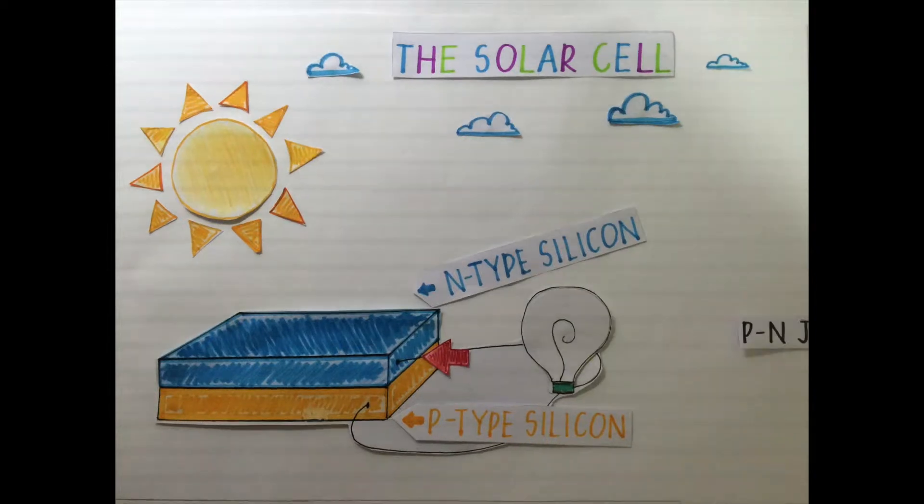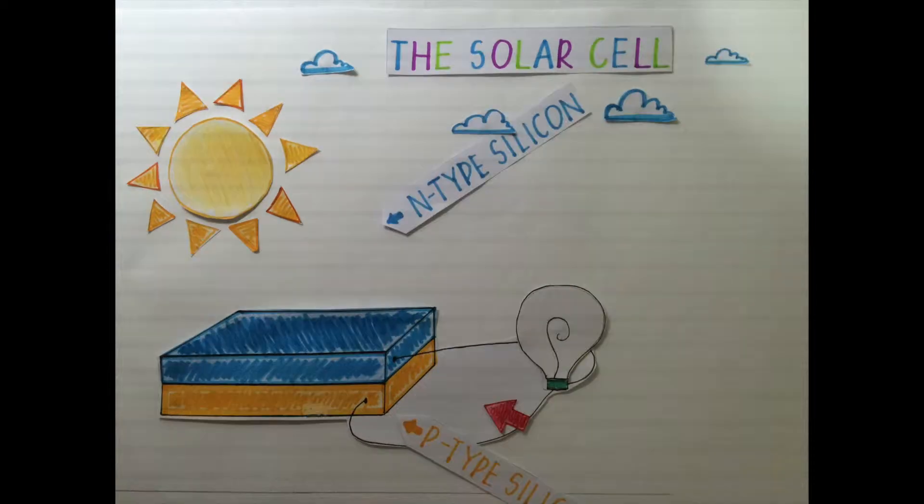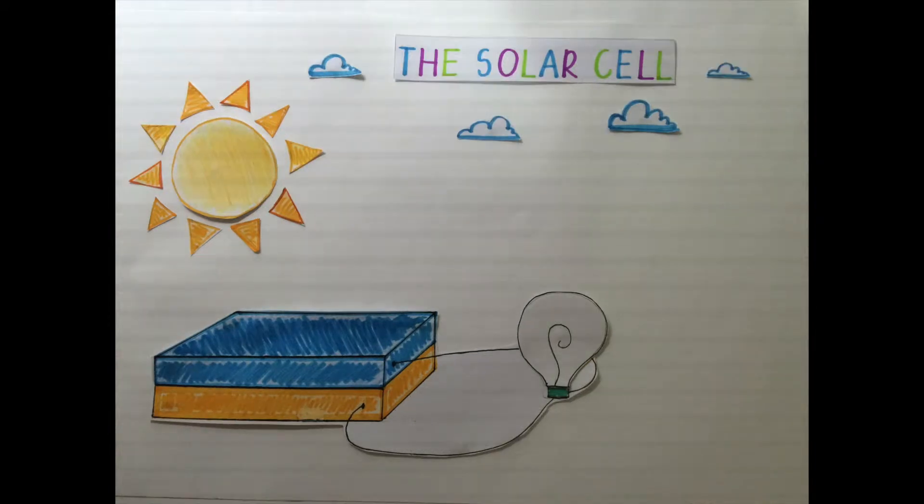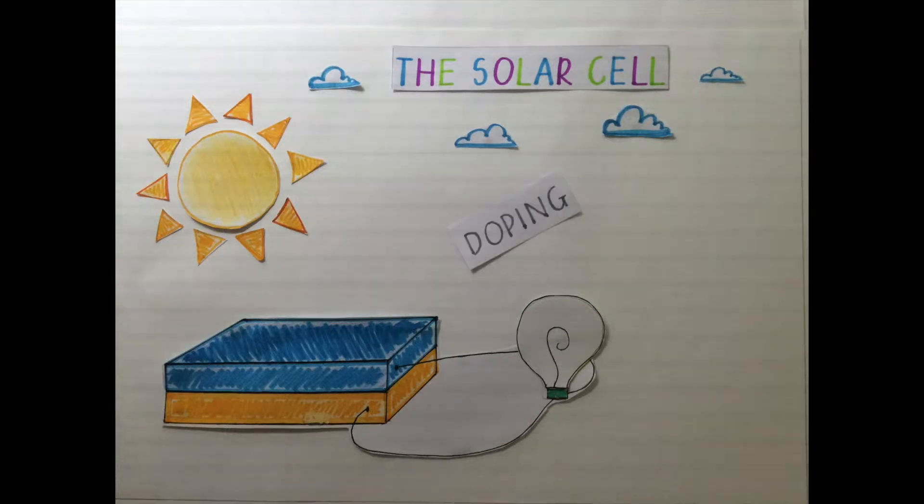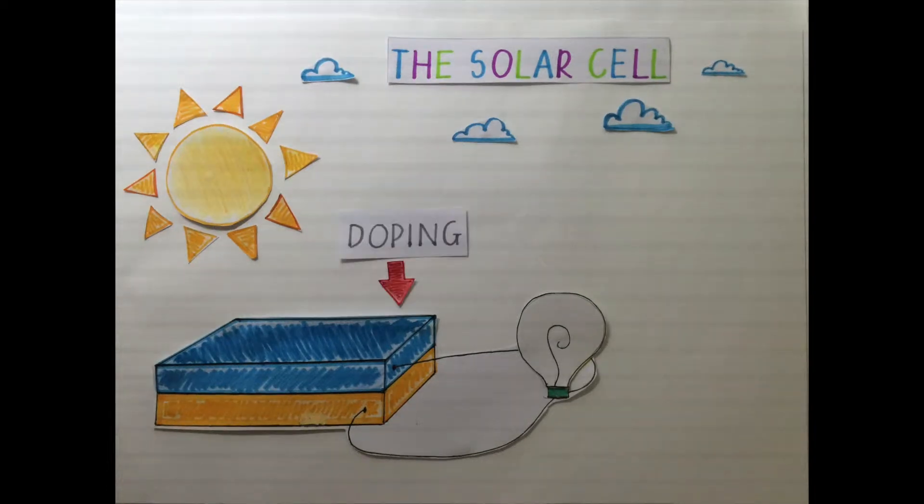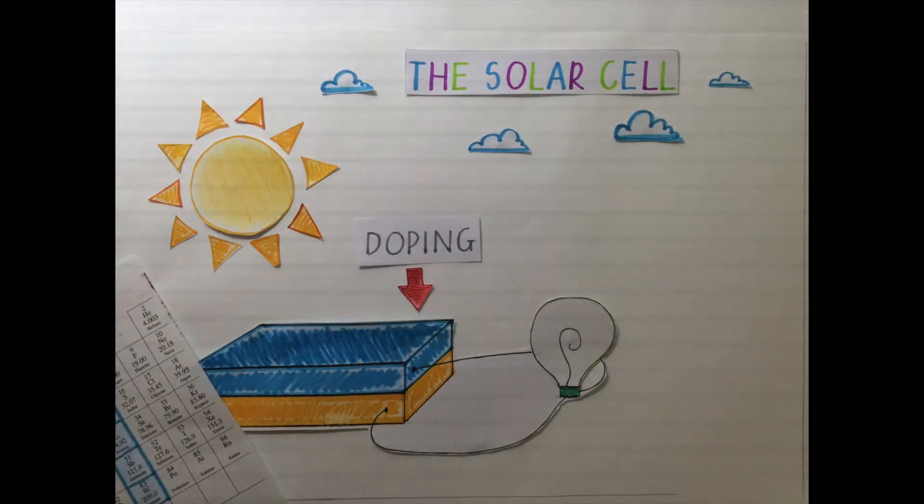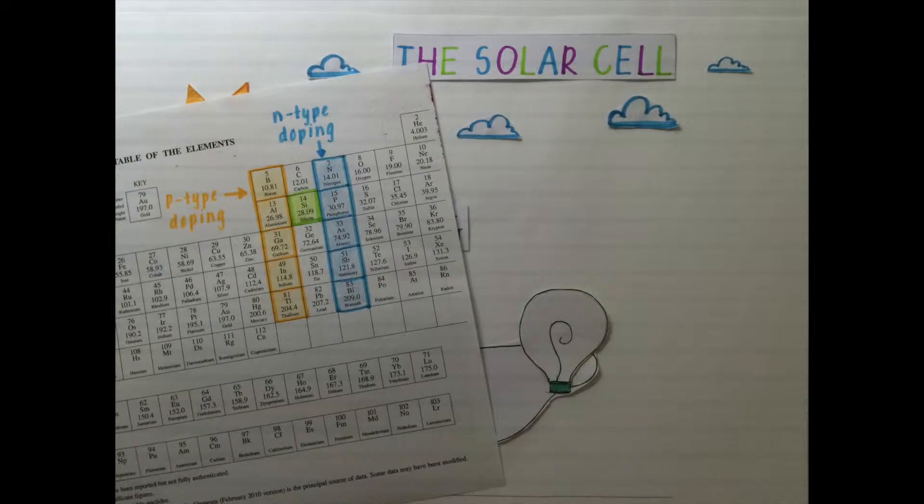The reason why silicon has an N-type and a P-type is because the plates of silicon have undergone what we call doping. Doping is basically the addition of very small amounts of impurities from the group 3 or group 5 elements in the periodic table.